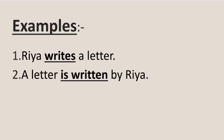In the first example, i.e. Riya writes a letter, Riya does the action — Riya is the doer of the action, writes. So, Riya, i.e. the subject, has been shown to be active.